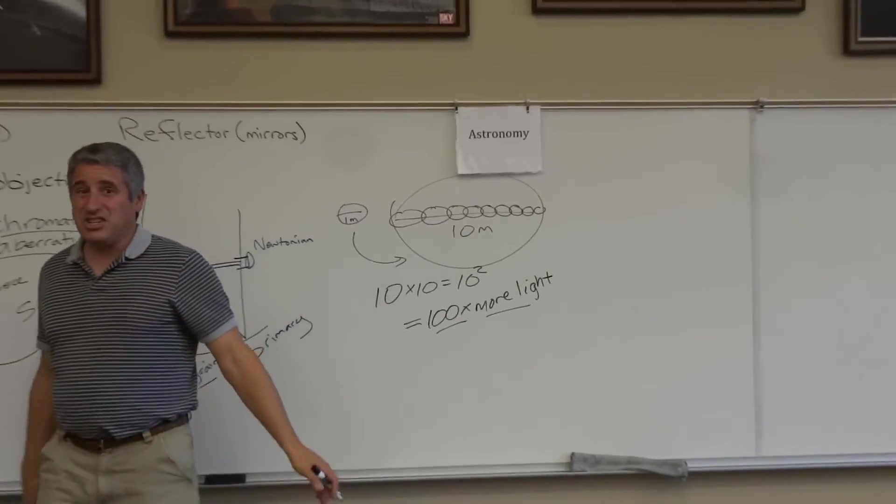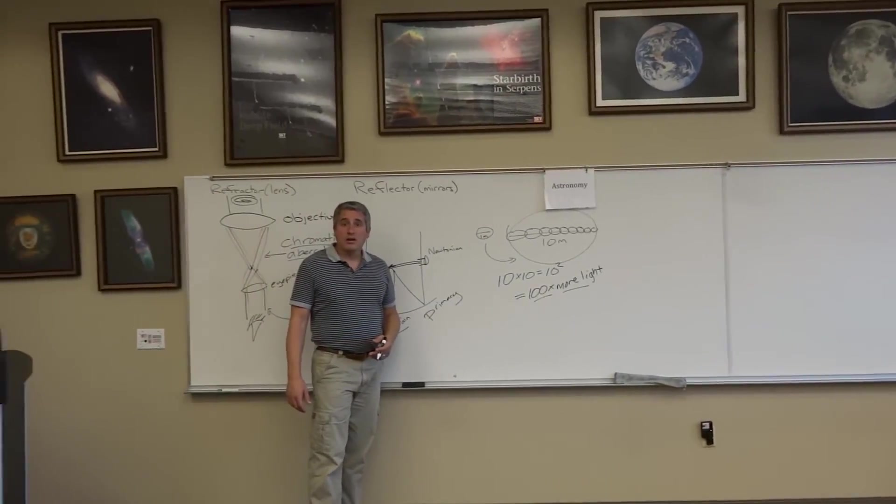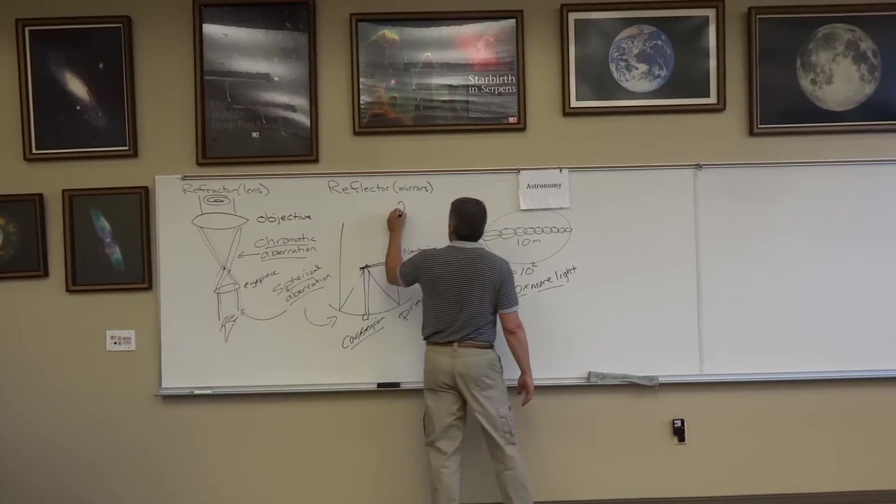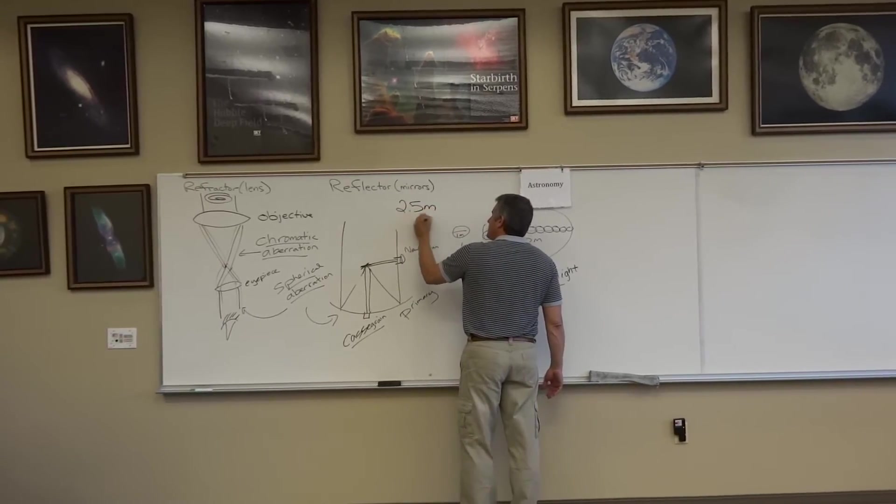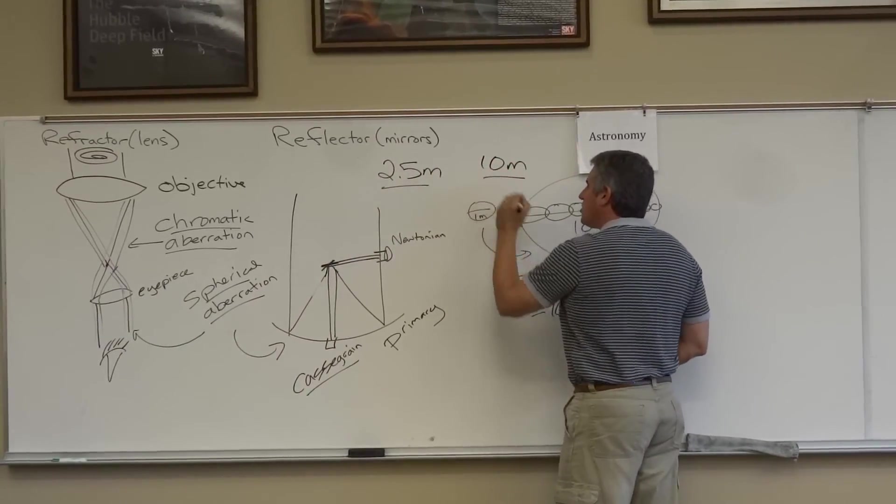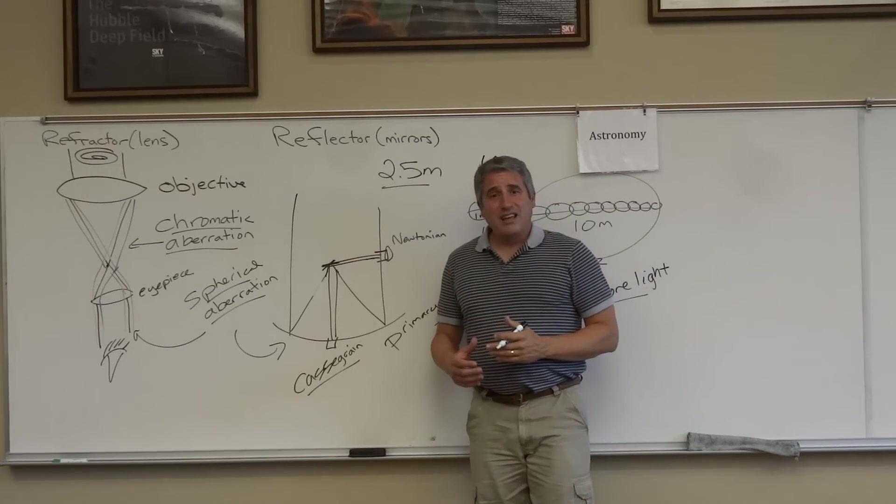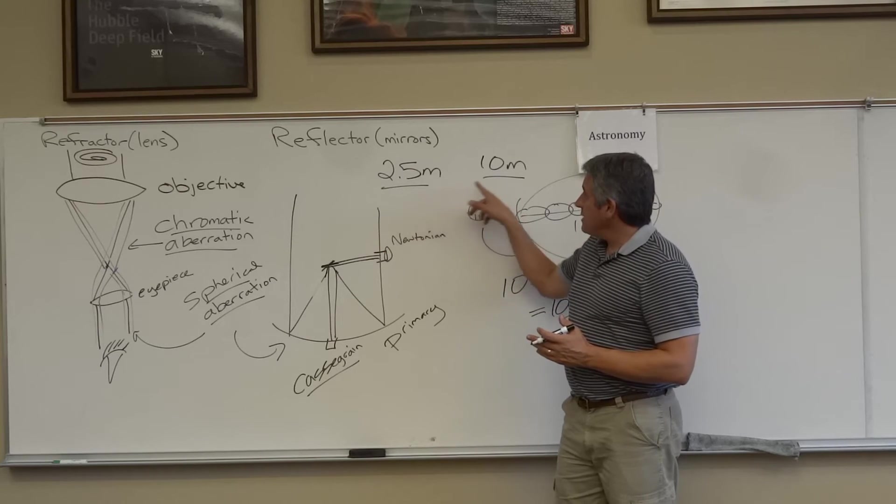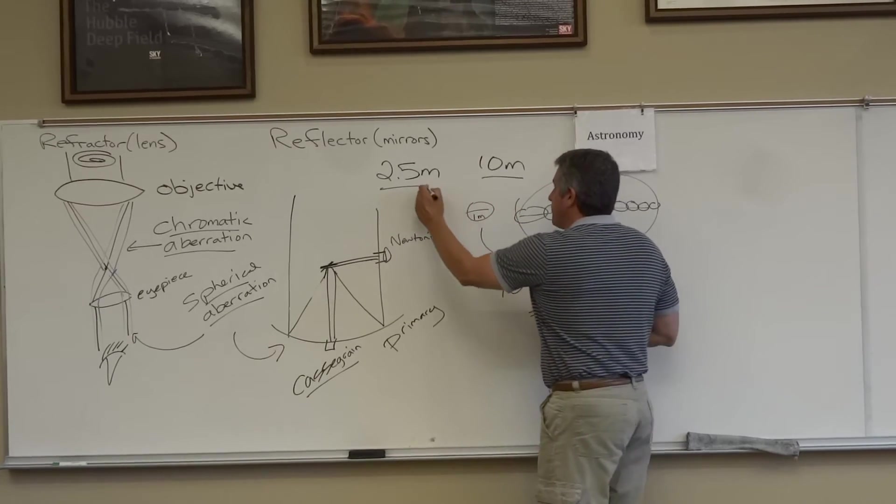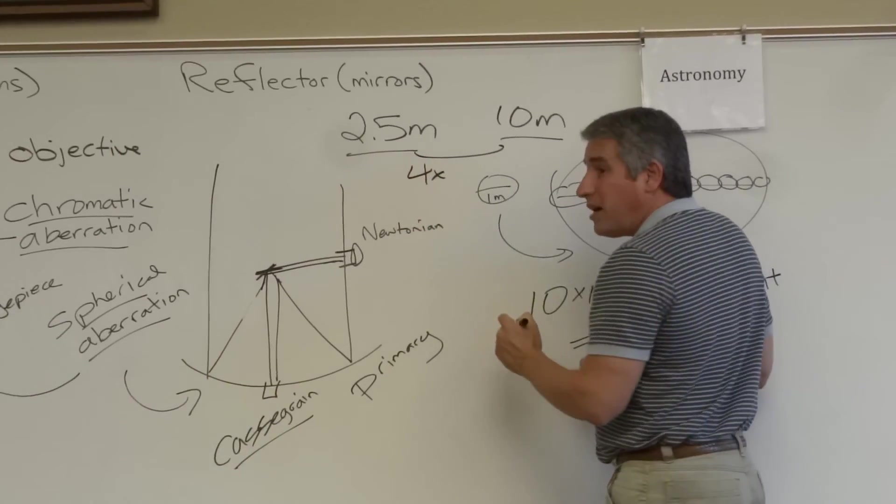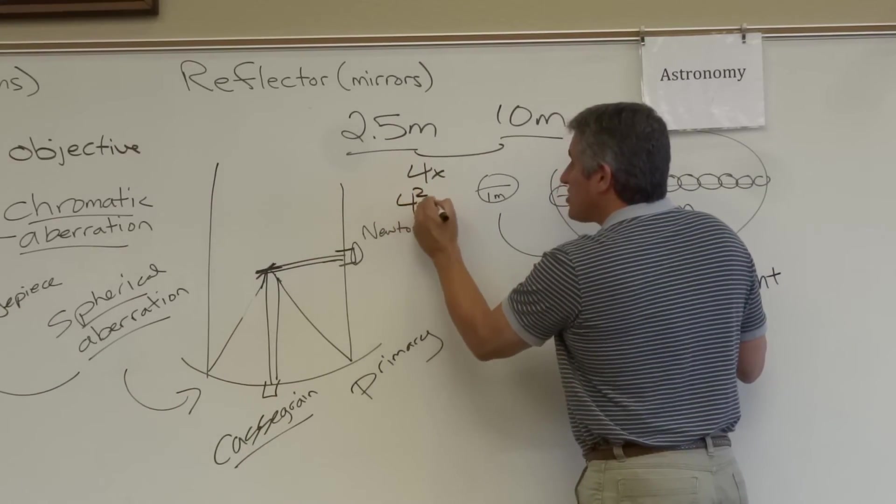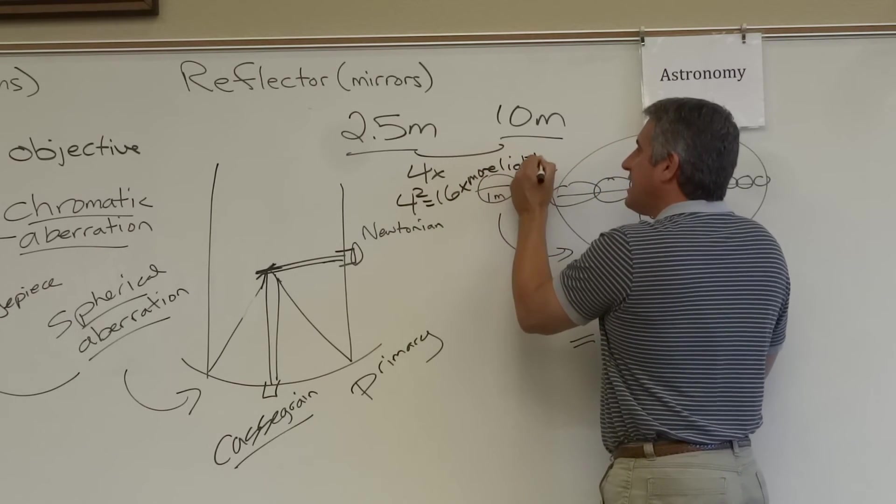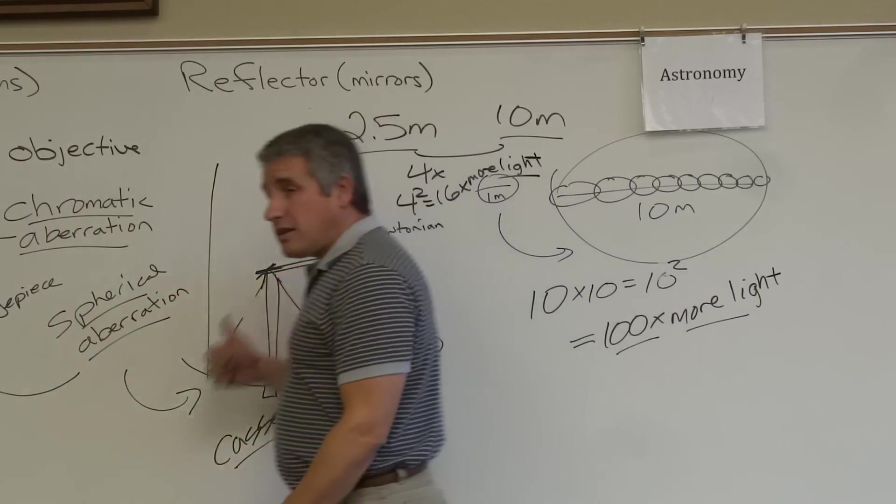There is a tremendous advantage to building a bigger telescope. The biggest telescope, the Hubble Space Telescope, not the largest telescope in the world, but the Hubble Space Telescope is 2.5 meters across. Compare that to our 10 meter telescope. How much more light are we gathering at the Keck Telescope in Hawaii? Well, you look at that and you say, wait a minute, 10 compared to 2.5, that's 4. It's 4 times bigger, but how much more light are we gathering? 4 squared or 16 times more light.